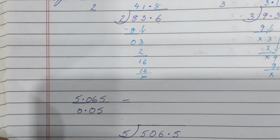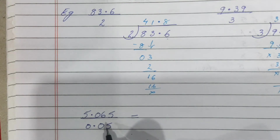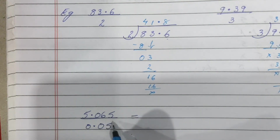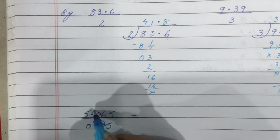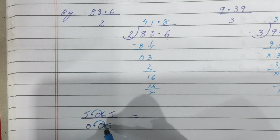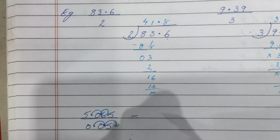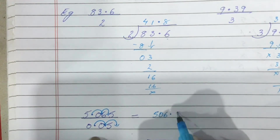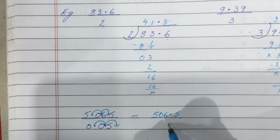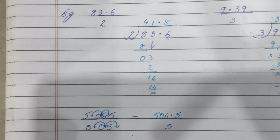There is one more thing. If we have a decimal in the numerator as well as in the denominator, then we can shift the decimal counting the same number of places. If I shift one place here, I shift one place here; again one more place, so my decimal comes one more place. This number can be written as 506.5 divided by 5, and then I can do the normal division.